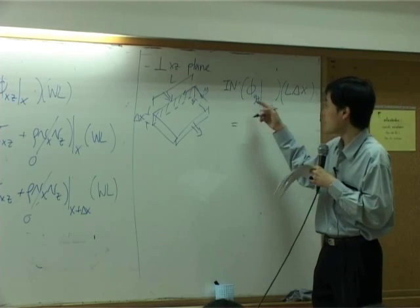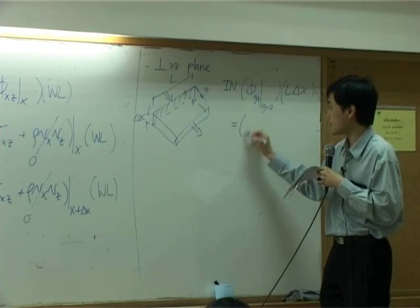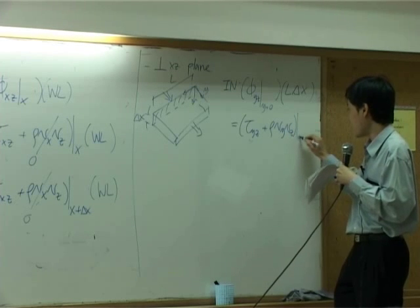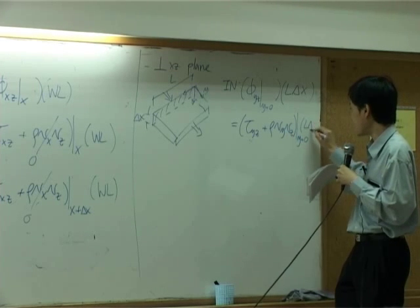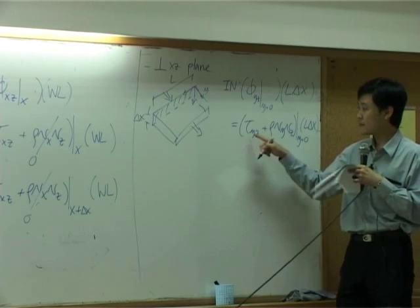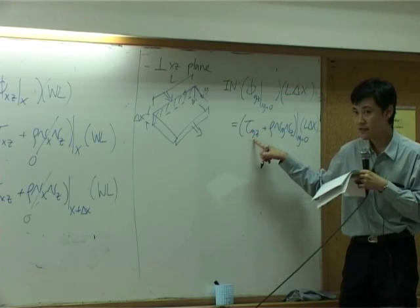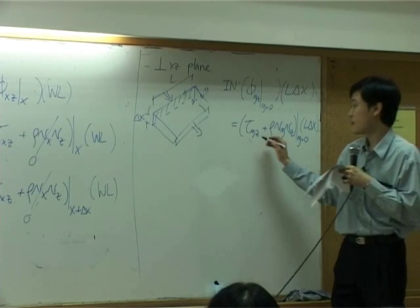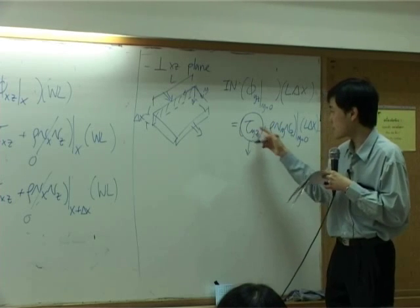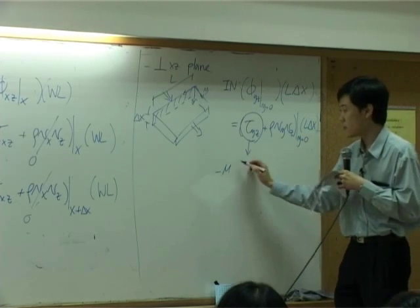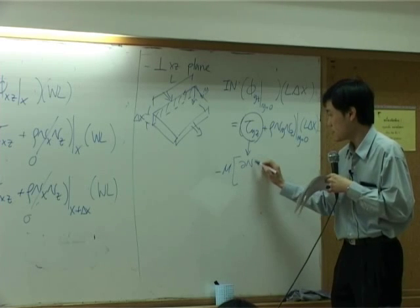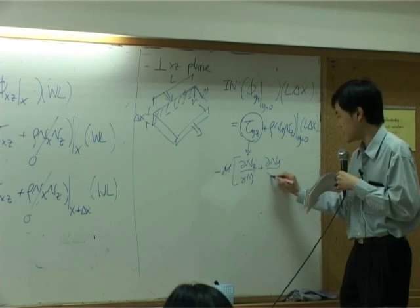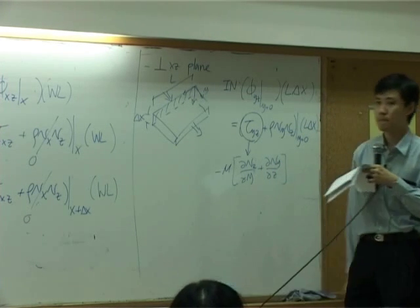Then VYZ is equal to tau YZ plus rho VY VZ at Y equal to zero, times L delta X. And tau YZ was already determined to be zero by Newton's law. Or if you recall, tau YZ can be written using Newton's law to be minus mu VZ by DY plus VY by DZ.